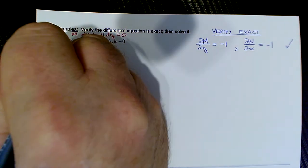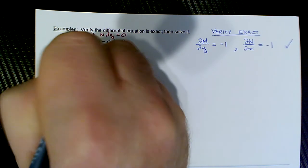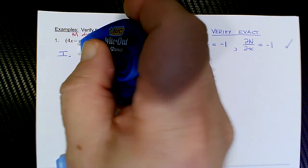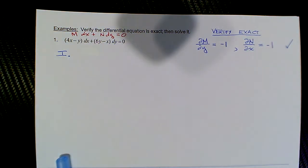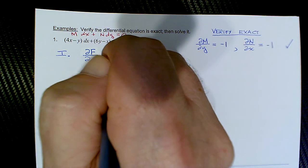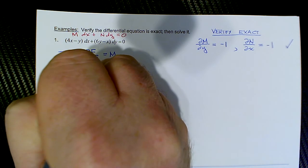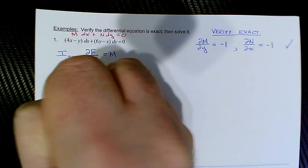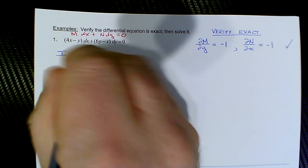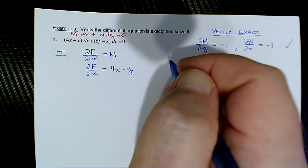Now the first major condition — Roman numeral I — is to impose the fact that there's a function f(x, y) such that the partial of f with respect to x is equal to M. So we state that the partial of f with respect to x equals M, which is 4x − 1 (that is, 4x − y). Now we want to find f(x, y), so we're going to integrate, understanding that we're integrating with respect to x.